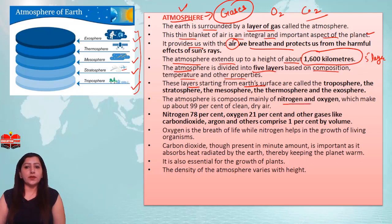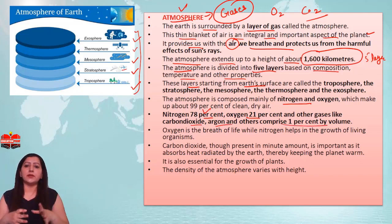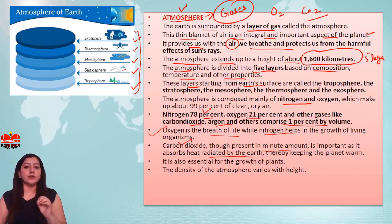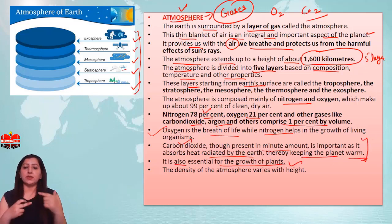The atmosphere is composed mainly of nitrogen and oxygen, which make up about 99% of clean dry air. Nitrogen is 78%, oxygen is 21%, and other gases like carbon dioxide and argon make up the remaining 1% by volume. Oxygen is what we breathe, and nitrogen helps other living organisms. Carbon dioxide, though very low in quantity, is also important as it absorbs heat radiated by the Earth.